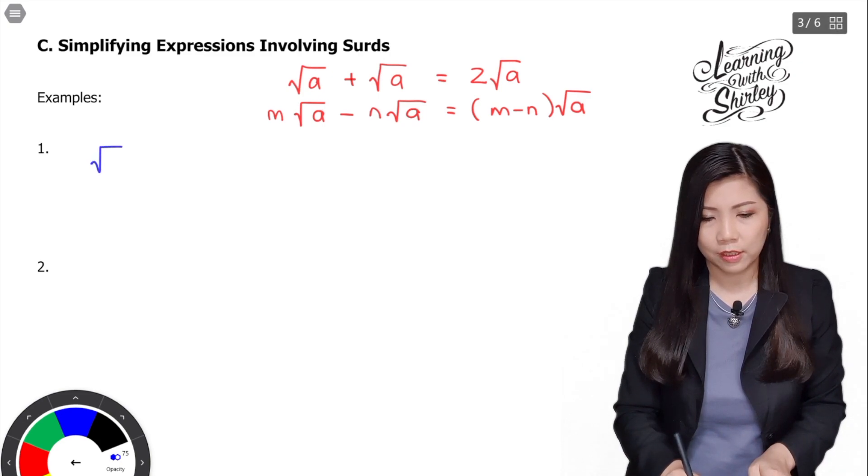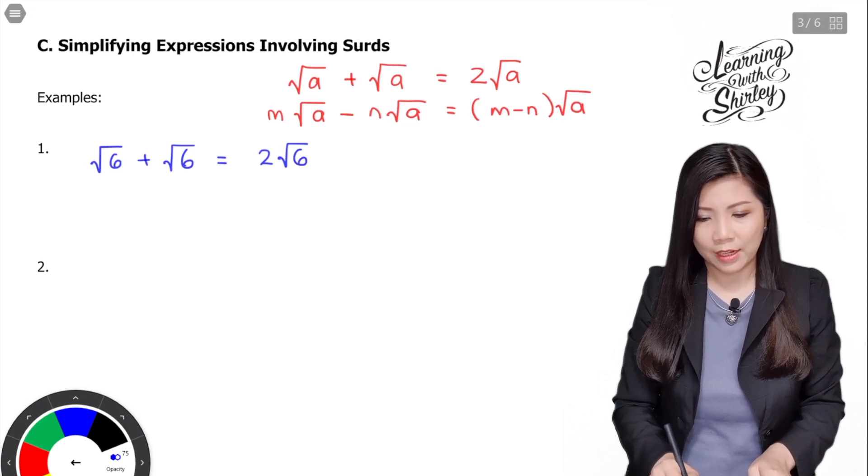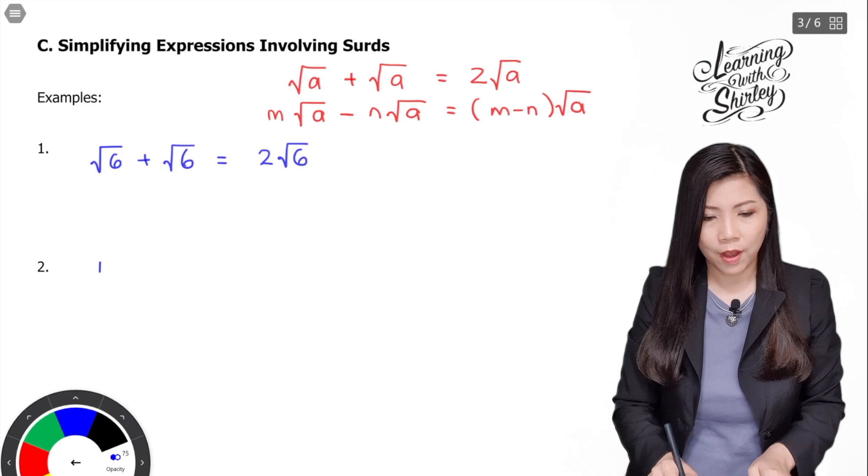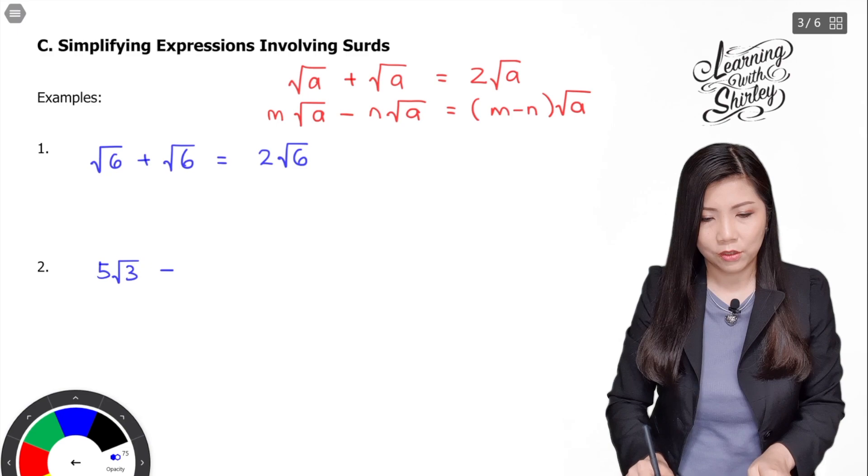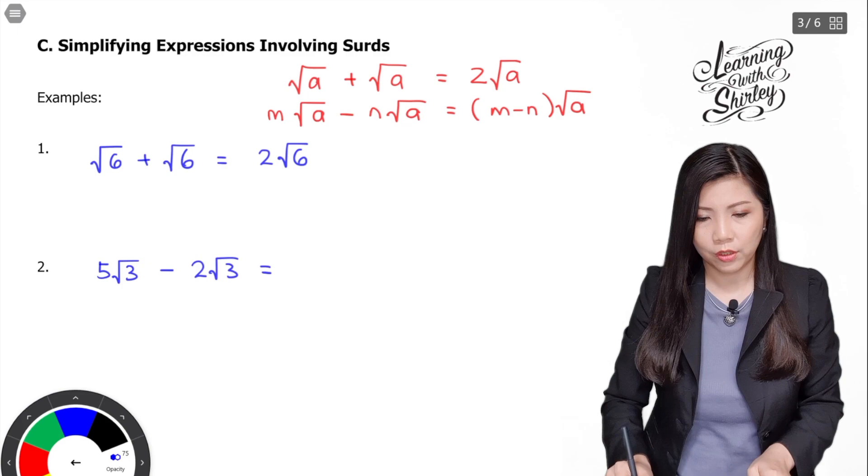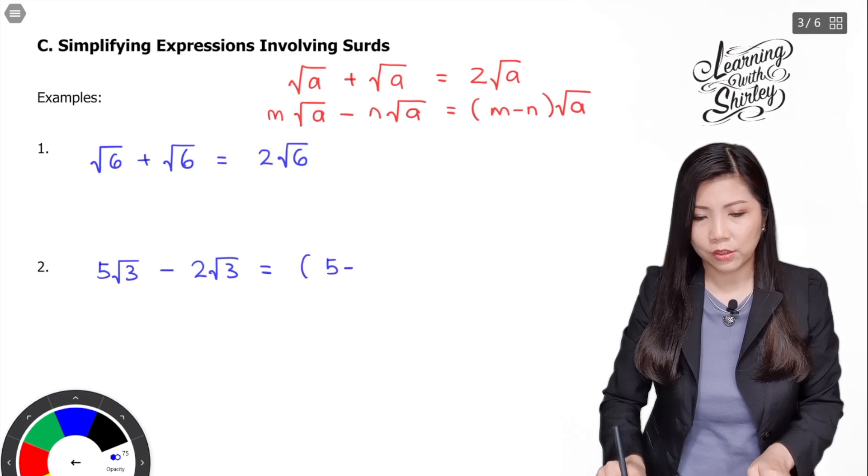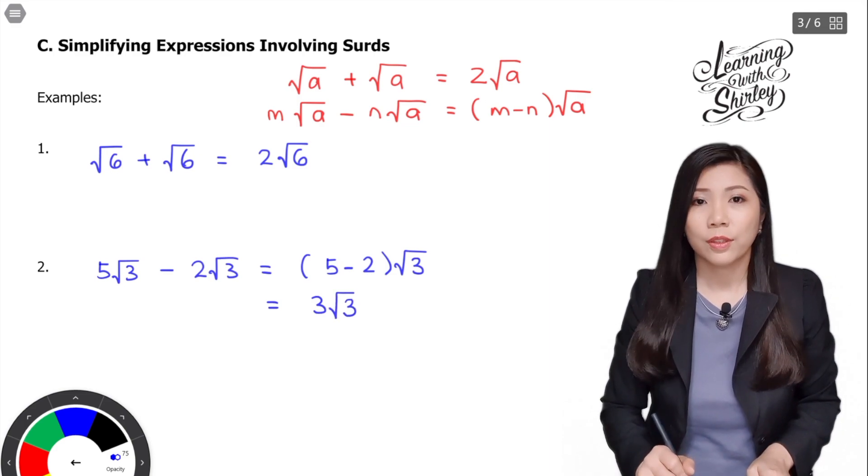So 5 surd A minus 2 surd A is equal to... factorize it, 5 minus 2 in bracket, and 5 minus 2 is 3, so 3 surd A. So that is the answer.